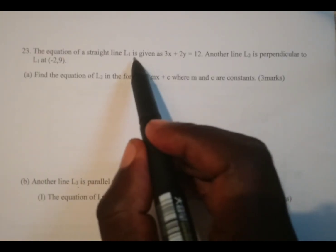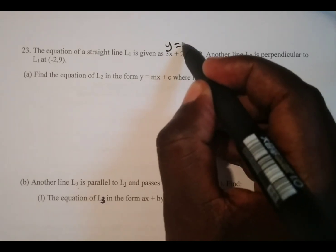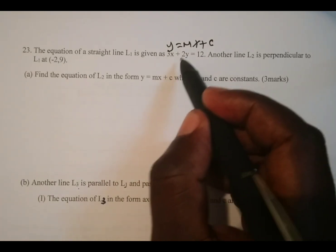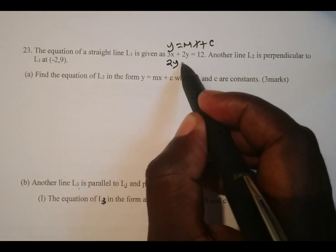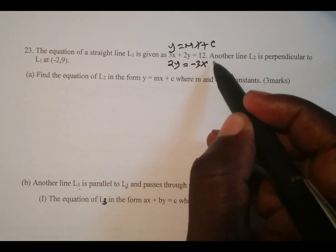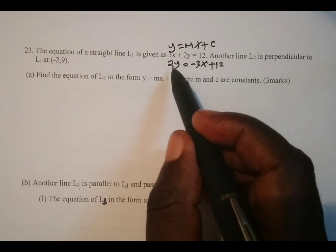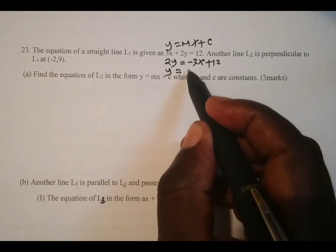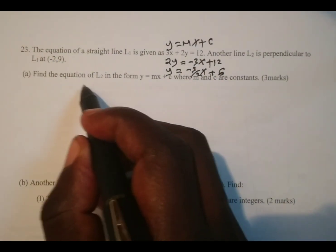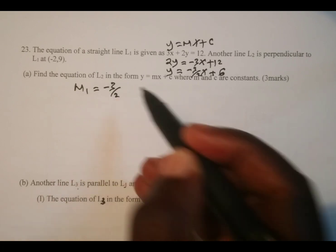The first thing we do is express L1 in the form y equals mx plus c so that we can identify the gradient. We have 2y equal to negative 3x plus 12. Dividing all through by 2, y is equal to negative 3 over 2 times x plus 6. That means the gradient of line 1, m1, is equal to negative 3 over 2.